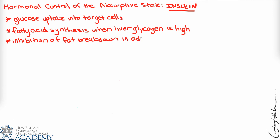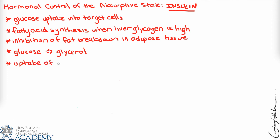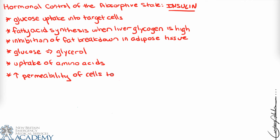Insulin also inhibits the breakdown of fat in adipose tissue — this makes sense because if there's already too much glucose, we don't need to break down fat for additional energy. Glucose can also be used to make glycerol and then combined with fatty acids to make triglycerides, so it isn't only used in glycolysis or the Krebs cycle. Additionally, insulin causes uptake of amino acids.